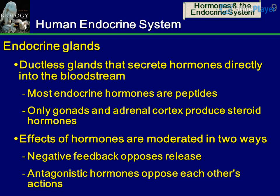The Human Endocrine System: Endocrine glands are ductless glands that secrete hormones directly into the bloodstream. Most endocrine hormones are peptides. Only the gonads and adrenal cortex produce steroid hormones. The effects of hormones are moderated in two ways: negative feedback opposes release, and antagonistic hormones oppose each other's actions.